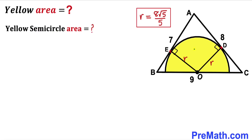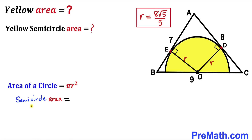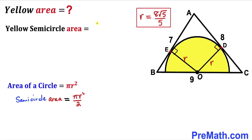Now for our final step: calculating the area of the yellow semicircle. Recalling that the area of a full circle is πr², the area of a semicircle is πr² / 2. With our radius r = 8√5 / 5, we compute π/2 × (8√5/5)².